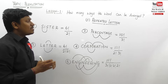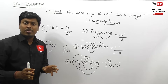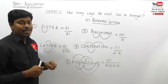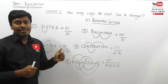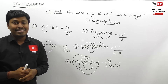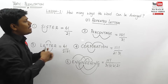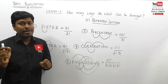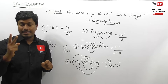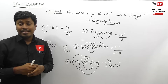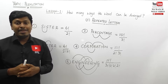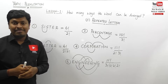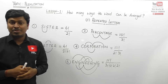If it is non-repeated letters, just count how many letters are in the given word. If it is repeated letters, apply this logic to easily get the answer. For any word, step one: always count how many letters are there. Step two: check how many letters are repeated in the given word and place the corresponding factorials in the denominator. Now let's move on to lesson number two.